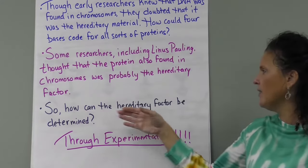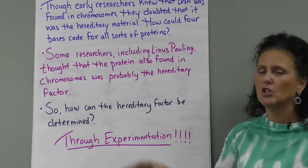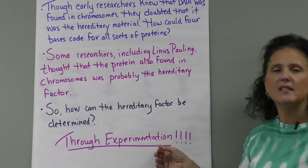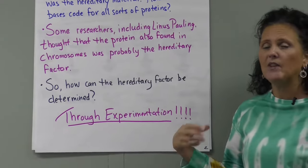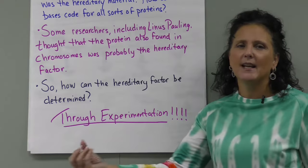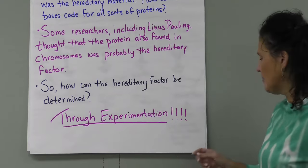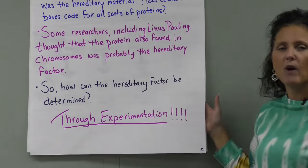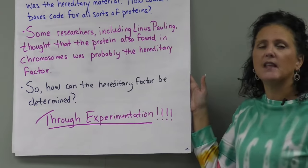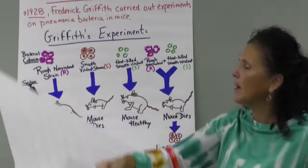So how can the hereditary factor be determined? The only way we can determine things through science is through experimentation. We have to have a hypothesis, perform an experiment, collect data, and then we can accept or reject our hypothesis. Right now, we're going by the hypothesis that proteins carry the genetic code.